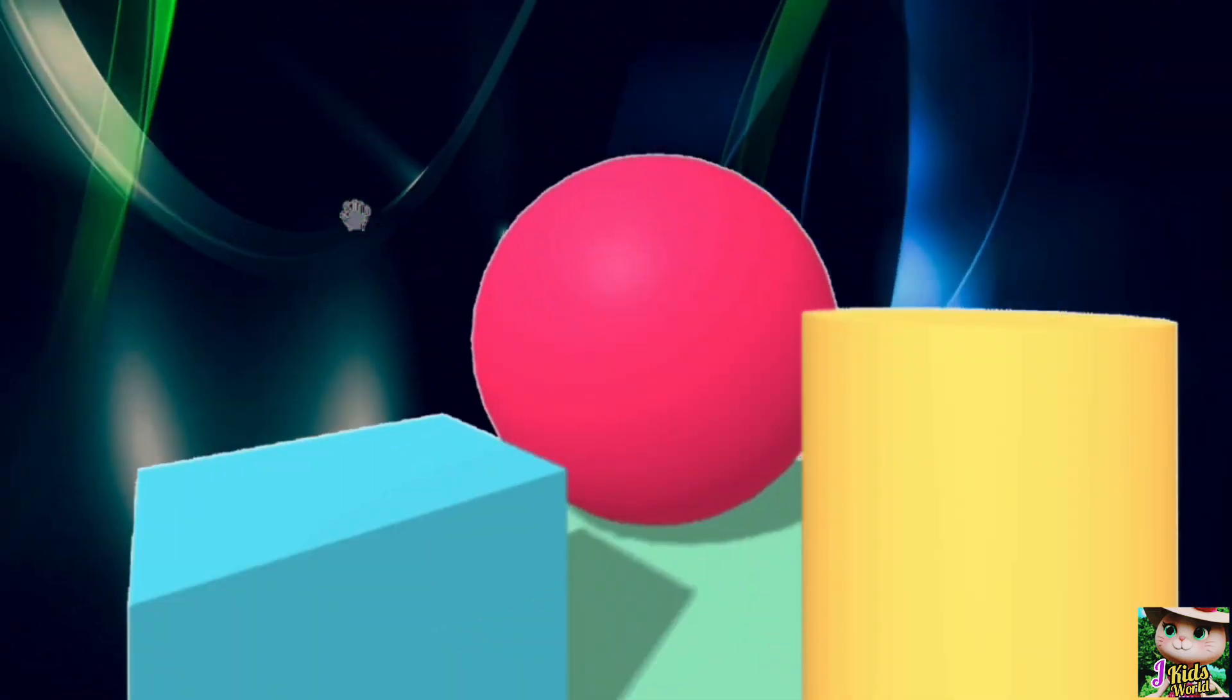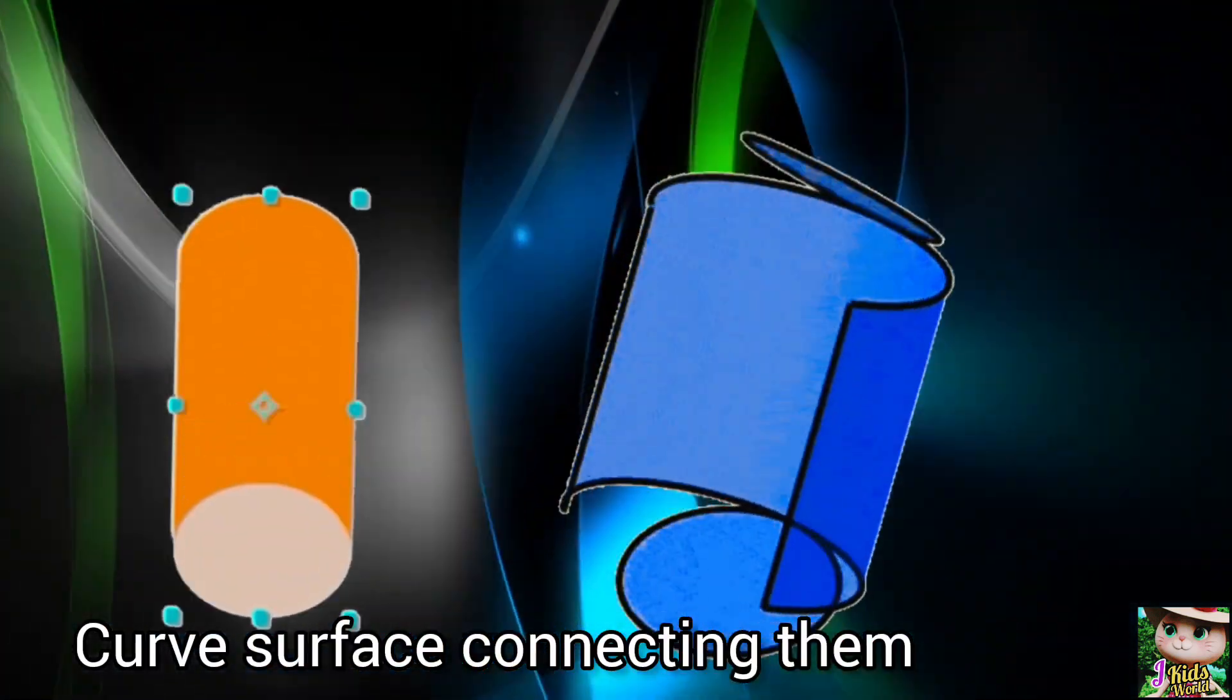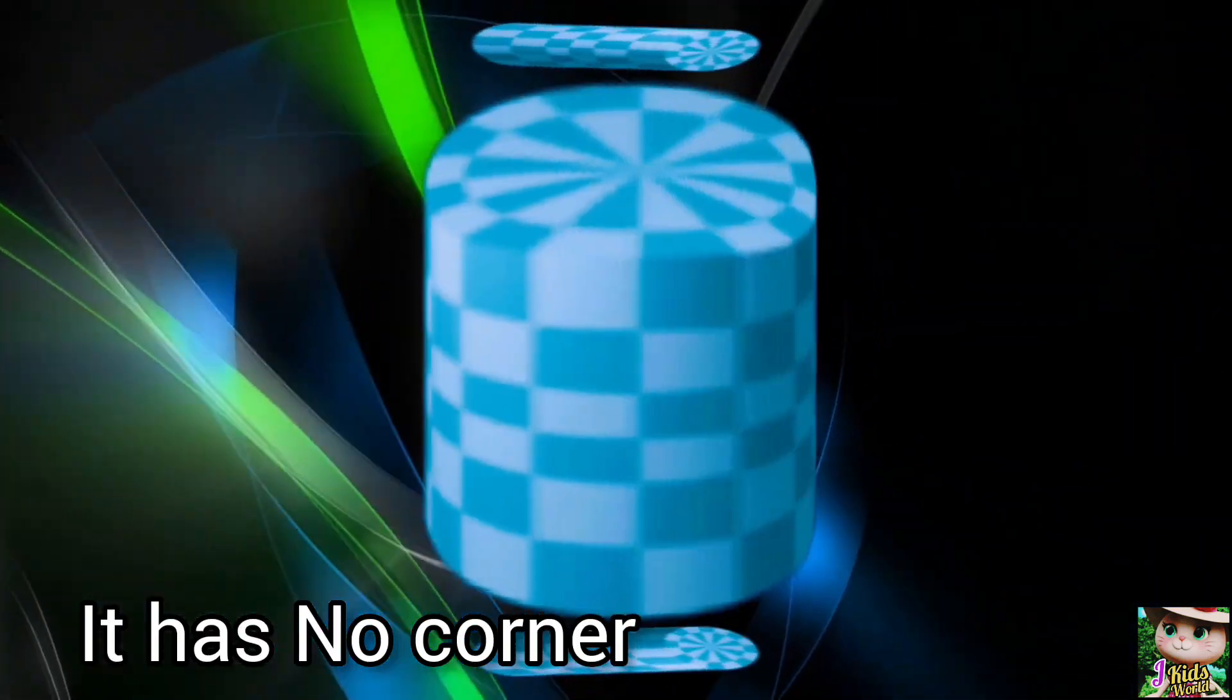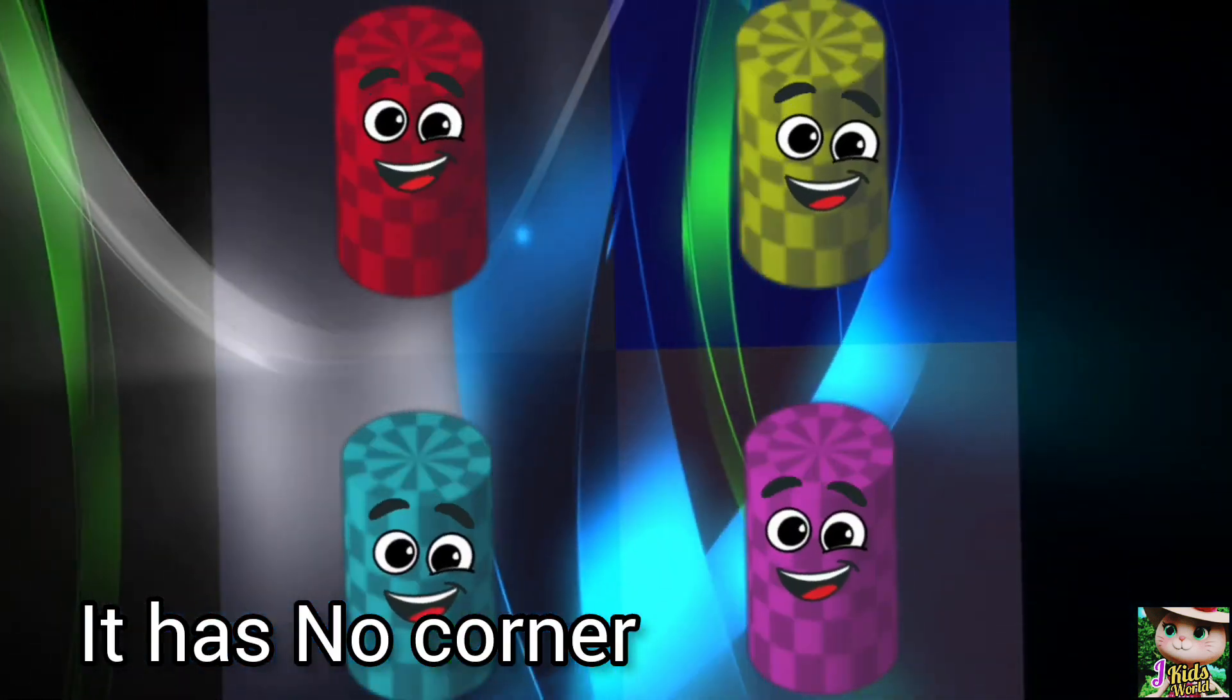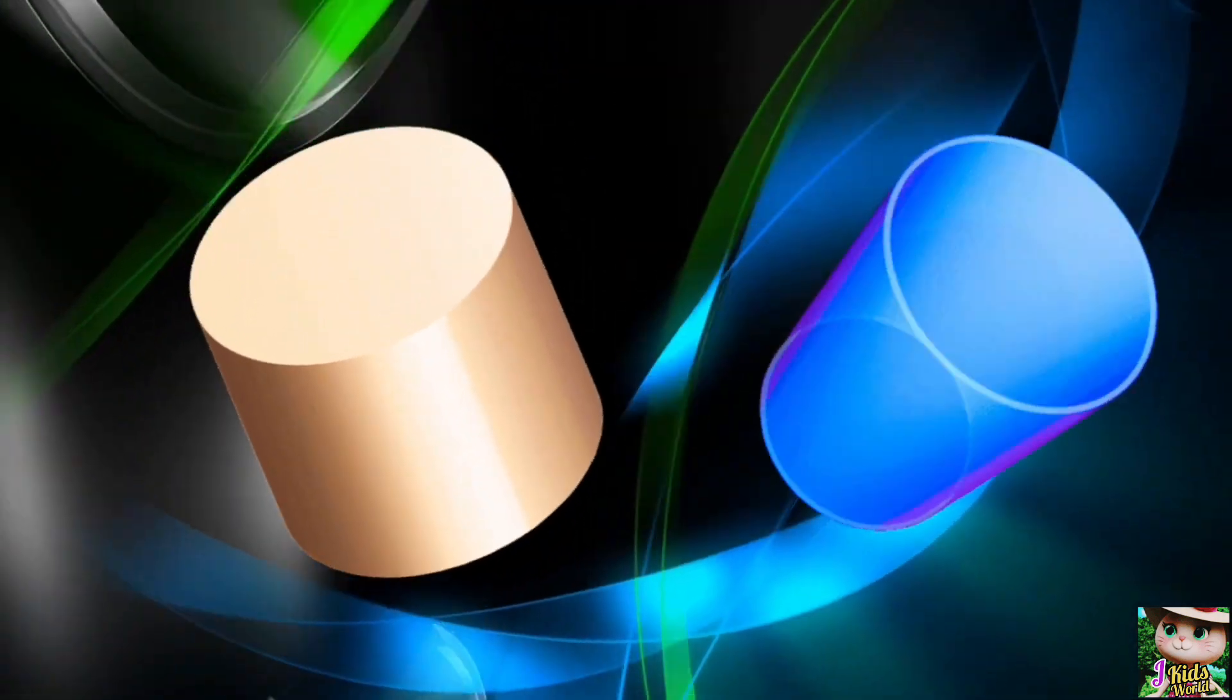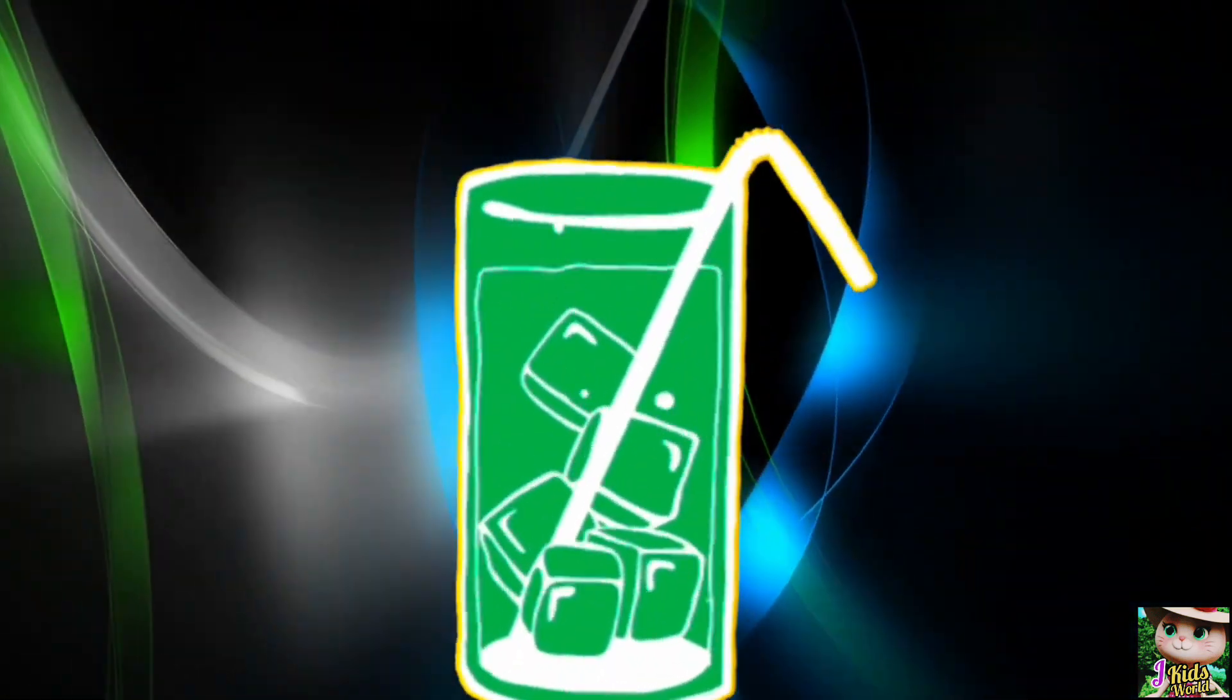The cylinder has 2 circular faces and a curved surface connecting them. It has no corners, but it does have two edges.